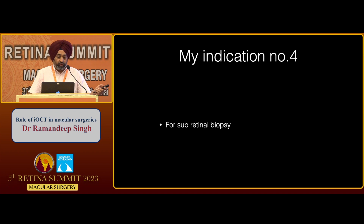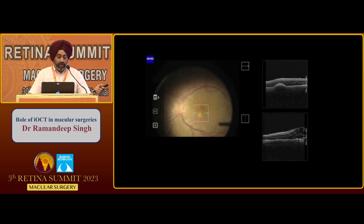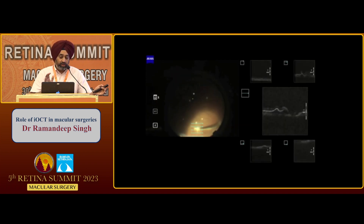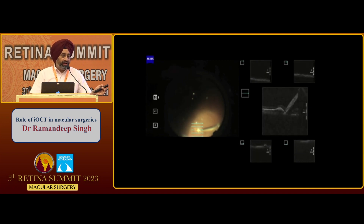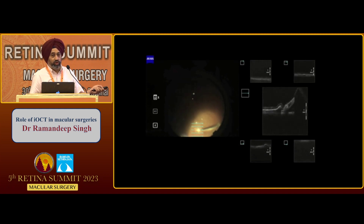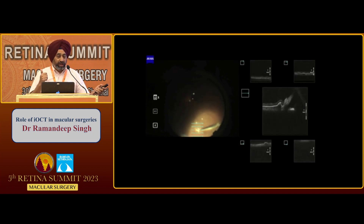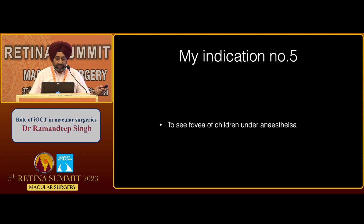We do a lot of uveitis at our center, so subretinal biopsy is another indication. People have shown that if you want to ensure you have taken adequate and correct material from the subretinal space, you will see tissue flowing into your flute needle. This has been done in lymphoma and melanoma cases. Wherever they are taking a subretinal biopsy, they run an MIOCT to make sure things are in the right place.